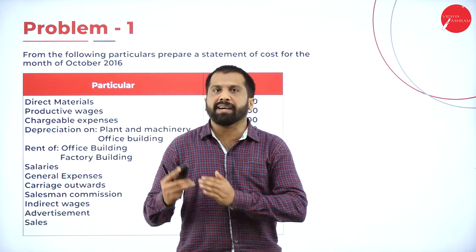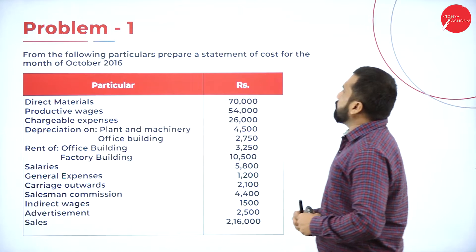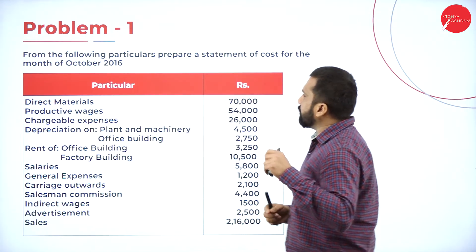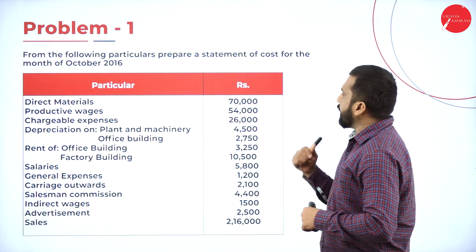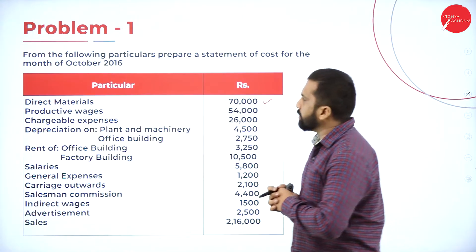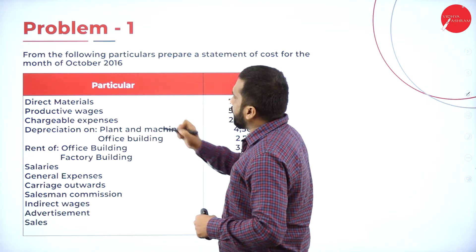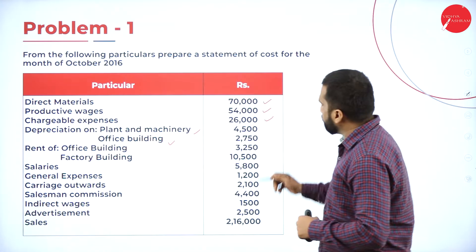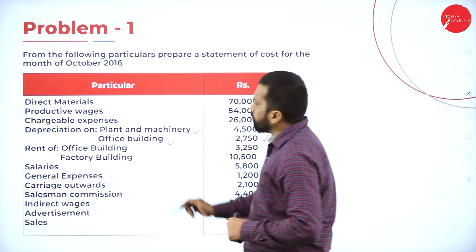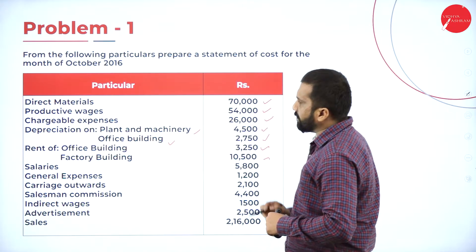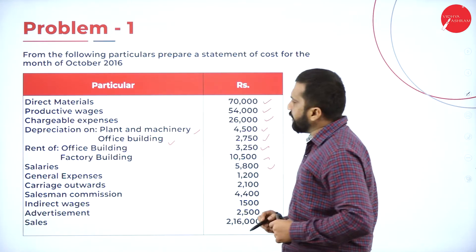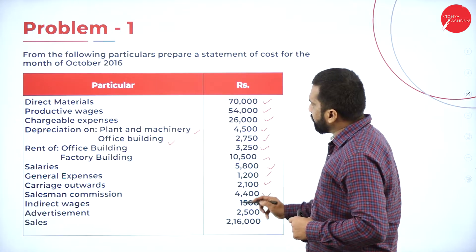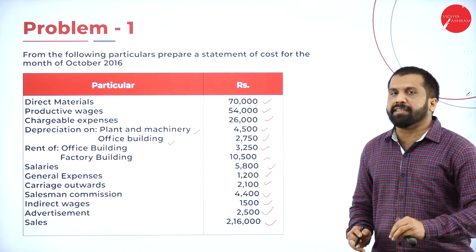Now, from the following particulars, prepare a statement of cost for the month of October 2016. As per this: direct material 70,000; productive wages 54,000; chargeable expenses 26,000; depreciation on plant and machinery 4,500 and office building 2,750; rent of factory building; salaries 5,800; general expenses 1,200; carriage outward, salesman commission, indirect wages, advertisement, and total sales. These are the information we have.